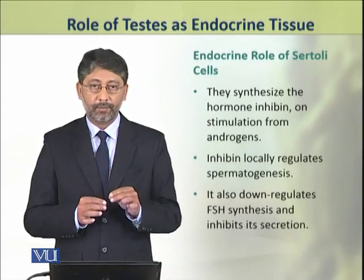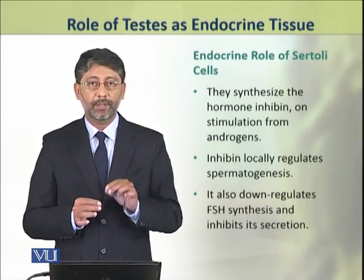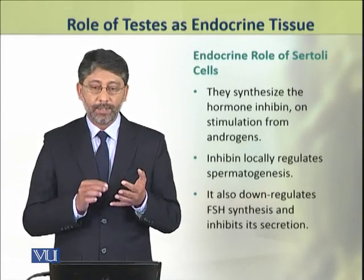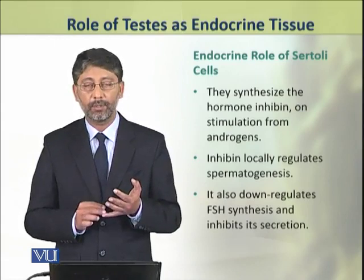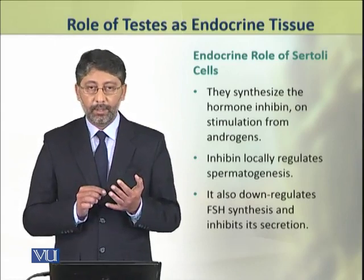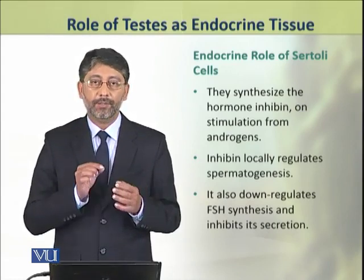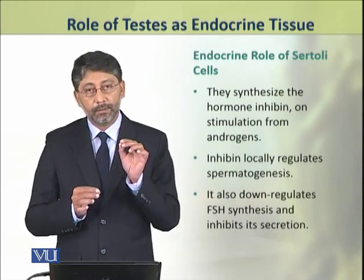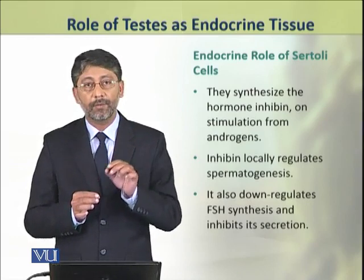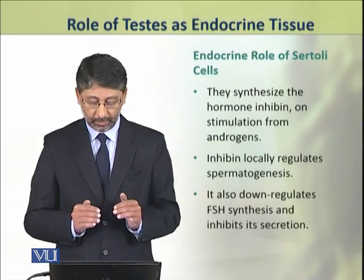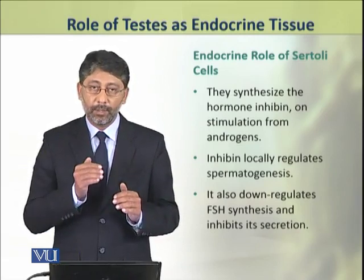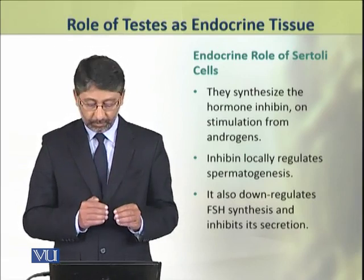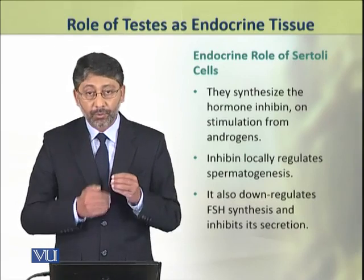Sertoli cells synthesize and secrete a hormone called inhibin. Inhibin is secreted on stimulation from androgens. It locally regulates the process of spermatogenesis and is also involved in the downregulation of FSH hormone from the pituitary gland.